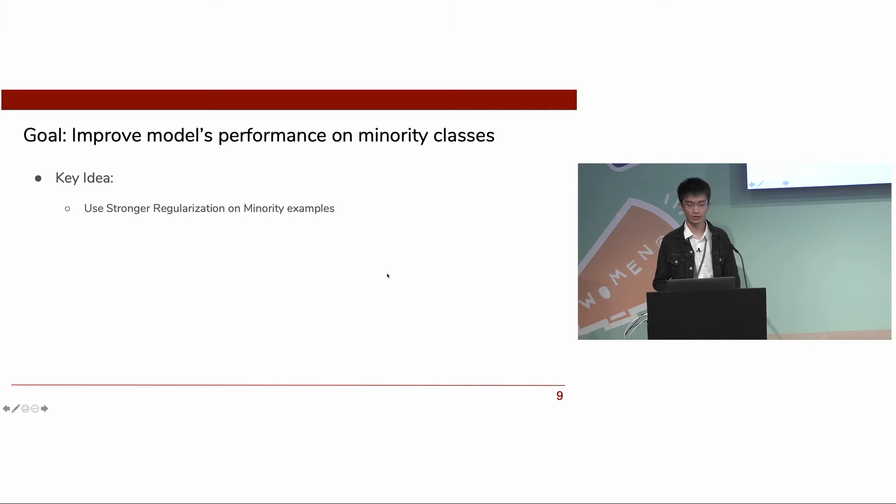So our goal here is to try to improve models' performance on minority classes during test time. Given data from frequent classes and minority classes, usually if we use a complex model like neural network to fit, we will likely fit the frequent classes well but overfit on the minority classes. So we want to fit a model that uses complex model for frequent classes but less complex model for the minority classes. Our key idea here is to use stronger regularization on minority examples to avoid overfitting.